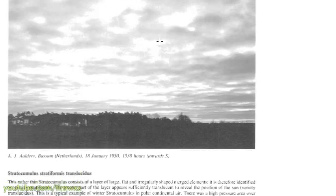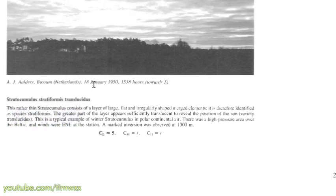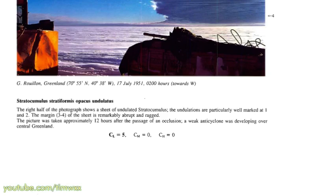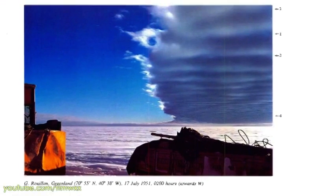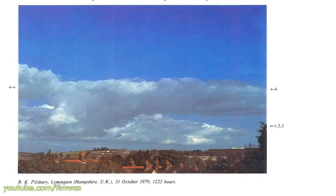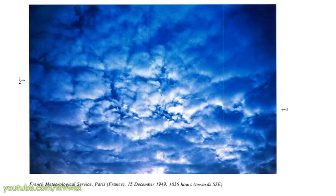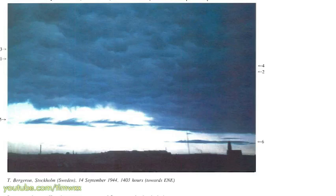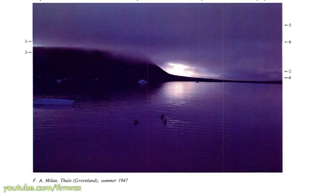Unfortunately, the picture here is not so great, but we can see from the text that this is stratocumulus, stratiformis, translucidus — low cloud type 5. They give you a little description, and related stratocumulus clouds would look like those examples. That can help you when you're looking at the sky and tie it into the surface chart and isentropic charts.